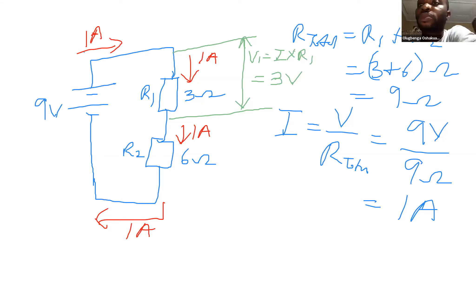Voltage drop across resistor R2, we can call that, since it's R2, let's just call it V2 to be product of current flow. I times, and that is current is 1 ampere, resistance is 6 ohms. That is 6 volts.